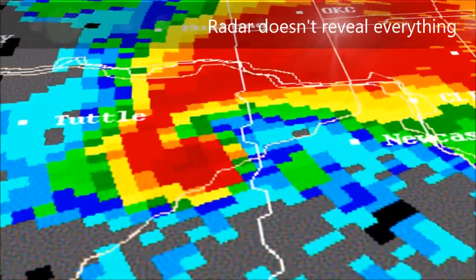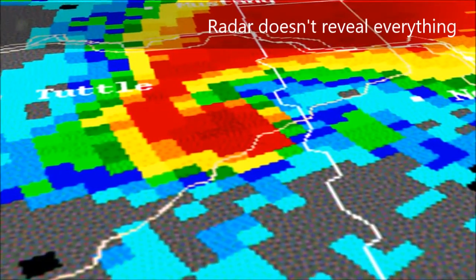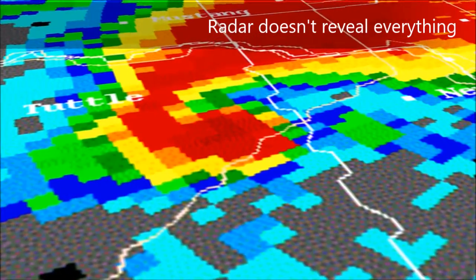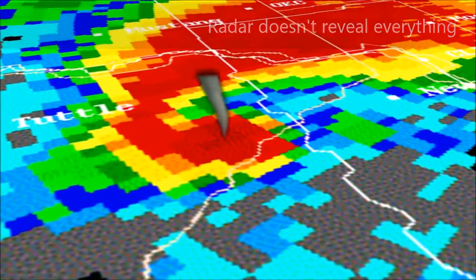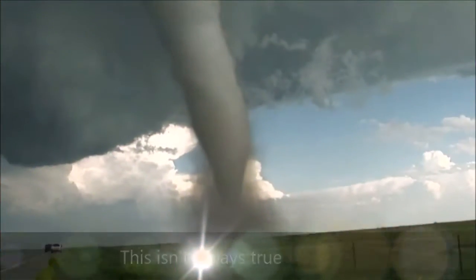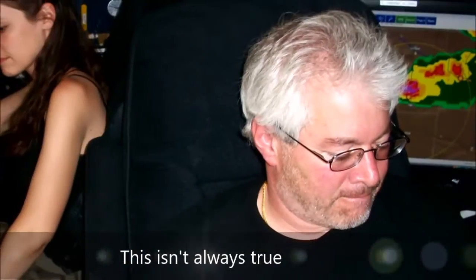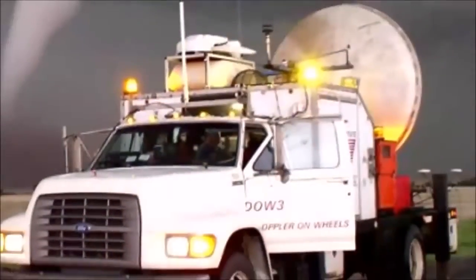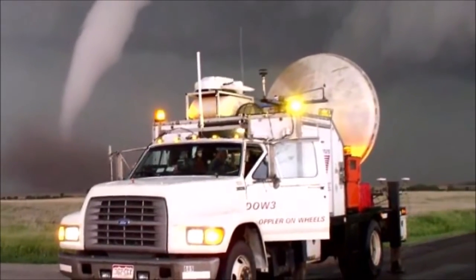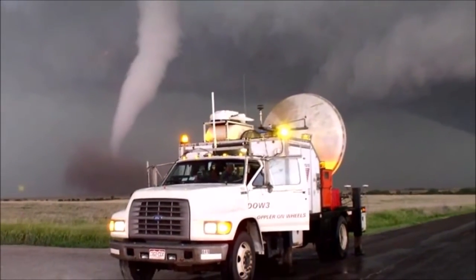If you look at a radar image, you'll see this big hook coming out of the thunderstorm. And that hook is where the strongest rotation in the storm is. And that's where the tornadoes form, if it's going to make a tornado. The goal of Wurman's research is to learn about these and other subtle differences in supercell thunderstorms that might help scientists forecast tornadoes more accurately and with fewer false alarms.